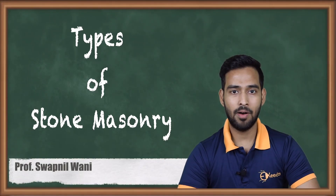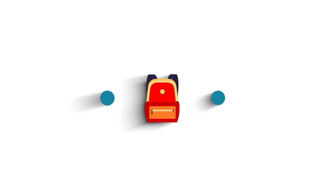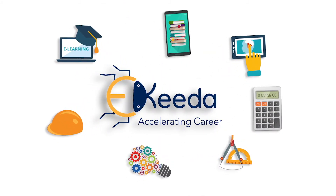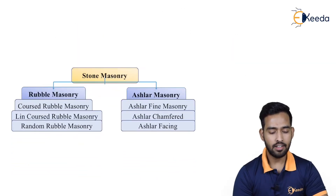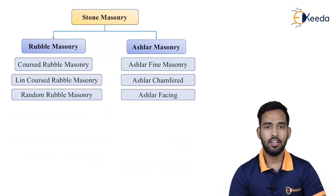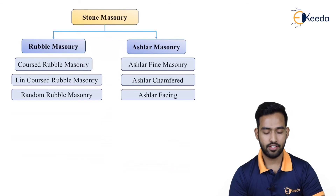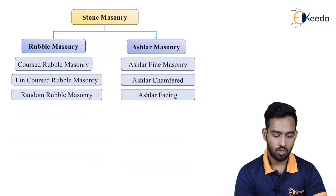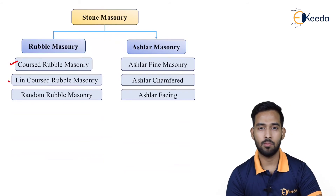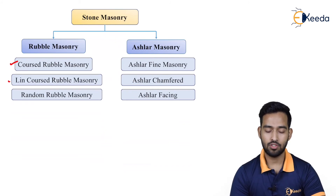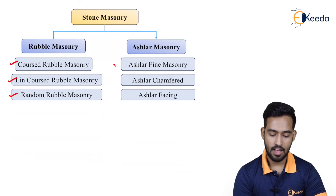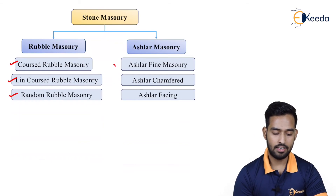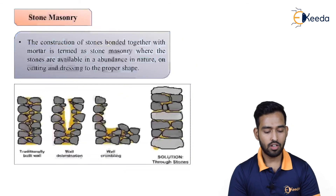Hello friends, in this video we are discussing about types of stone machinery. Stone machinery is one type which is divided into two types: first is rubble machinery and ashlar machinery. Rubble machinery is again divided into types — coarse rubble, lean coarse rubble, and random rubble machinery — whereas ashlar machinery is divided into ashlar fine machinery, ashlar chamfered machinery, and ashlar facing. Let us start and discuss about each one in detail.